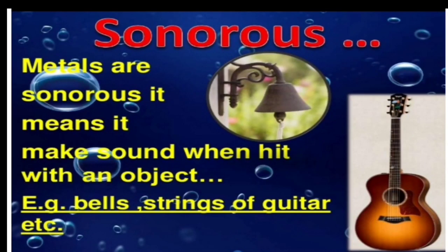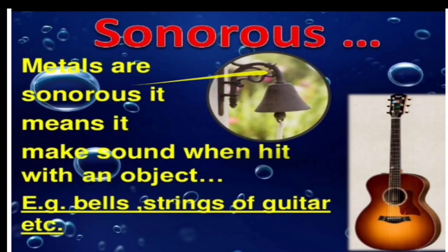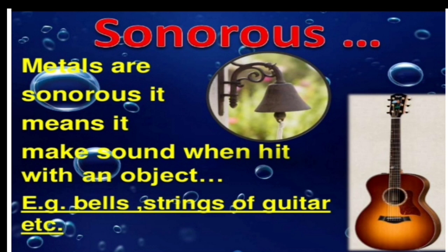The next property: by seeing a piano and a bell, we confirm that they produce sound. All metals produce sound, so that property is called sonorous. Metals are sonorous — they make sound when hit with an object. Examples: bells, strings of a guitar. They produce sound because whenever struck with a hammer, vibration of the particles takes place in metals, and due to that vibration they produce sound.